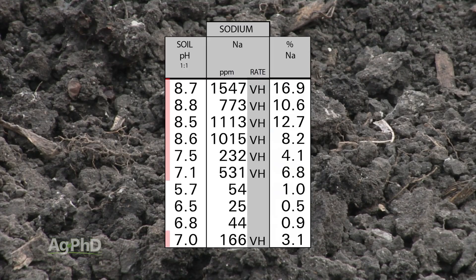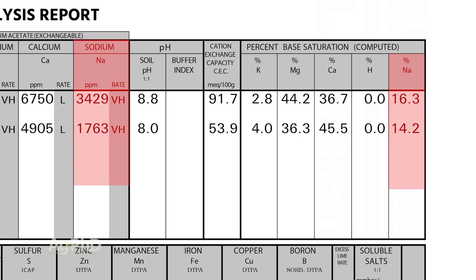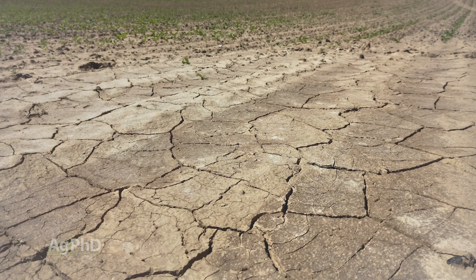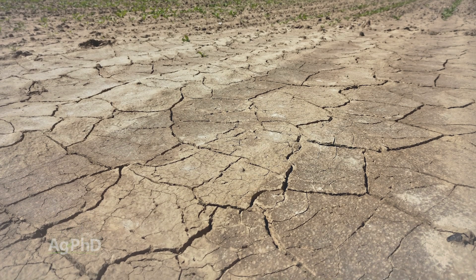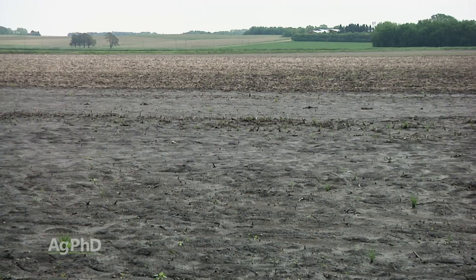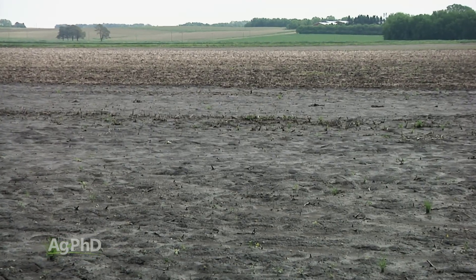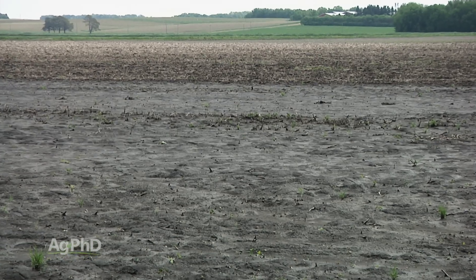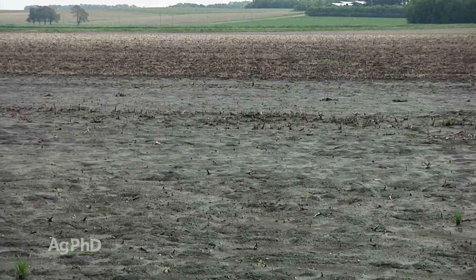In the soil, there can be too much of certain nutrients and it can actually be a problem. One in particular is sodium. If you have excess sodium in the soil, it's really bad. The pH goes way out of whack, the ground will become super hard, you won't be able to grow anything. If you have what we call a sodic soil, it's horrific — it destroys the soil. So to flush that sodium out of the soil, we want to turn it into a salt.